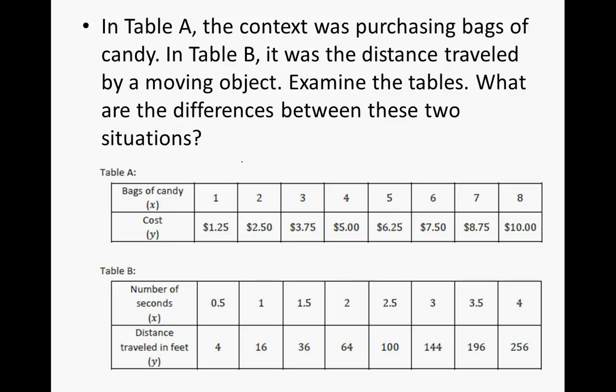So in table A, the context was purchasing bags of candy, and in table B, it was the distance traveled by a moving object. Examine the tables. What are the differences between these two situations?